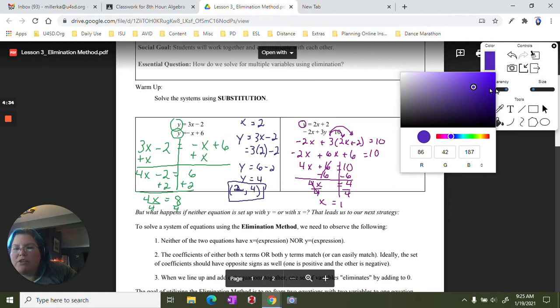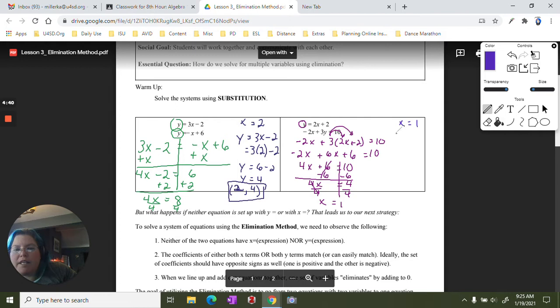Now, I am not done. I do need to go back and find the value of y. So if x equals 1, and I know y equals 2x plus 2, let's do that. Let's use 1 for x, and we get y equals 2 plus 2, y equals 4. So my solution is the ordered pair, 1, 4.